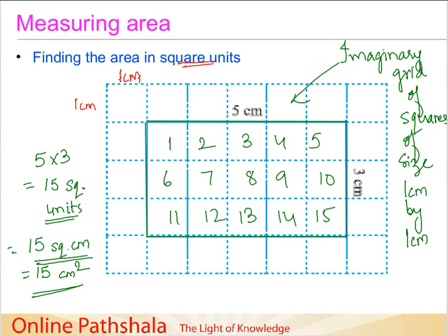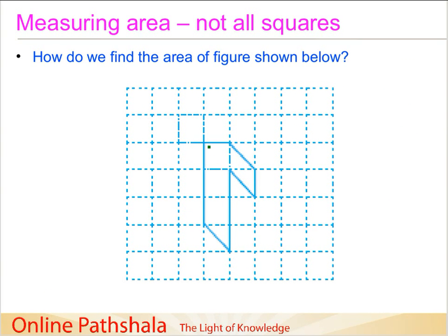But now let us have a look at this figure over here. In this case we don't have a perfect alignment with the boundary of the grid. This is the figure here and we are now supposed to find out the area enclosed within it — this is the area that we would be interested in finding out.